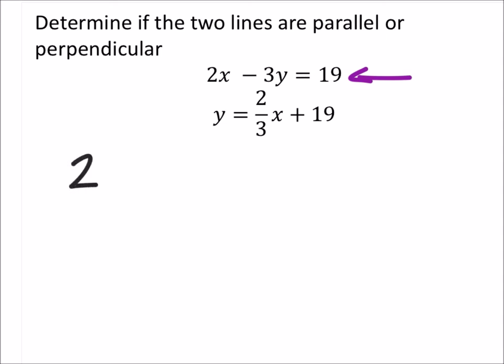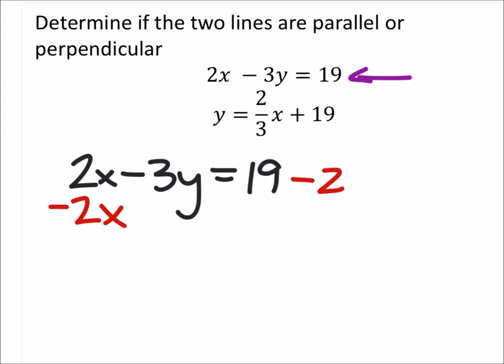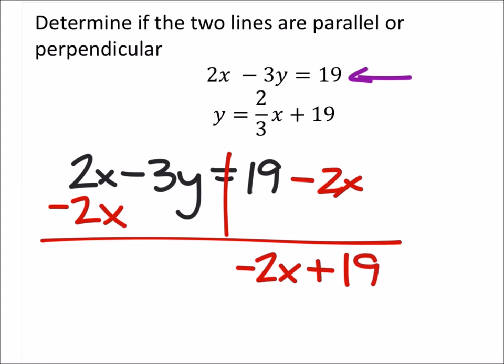So if I have this 2x minus 3y equals 19, I'll subtract 2x from both sides. I'm going to flip that around though, so I have negative 2x plus 19, just so it's in slope intercept form. I got negative 3y equals this stuff.